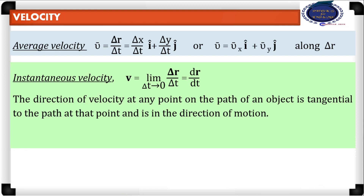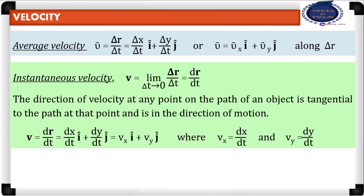The instantaneous velocity direction can be found at any point along the path. The instantaneous velocity in its rectangular components is the sum of Vx into i-cap and Vy into j-cap, where Vx and Vy are the components of the instantaneous velocity along the x and y axes.